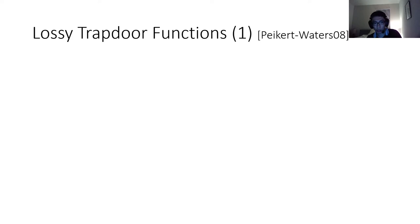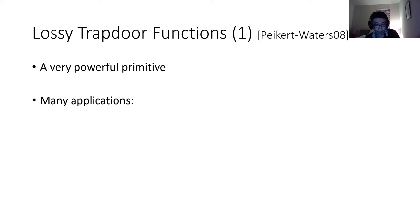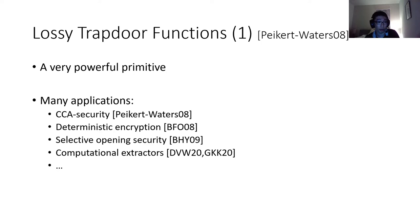So what are targeted lossy functions? Let's go back in time and start with the notion of lossy trapdoor functions, introduced by Peikert and Waters. It turns out that lossy trapdoor functions have been an incredibly useful primitive, in the sense that they have led to many, many applications. For instance, they gave the first construction of CCA-secure encryption from lattice assumptions.